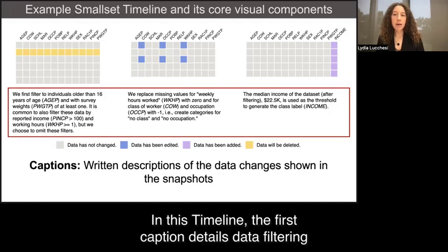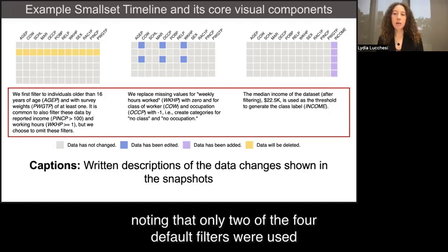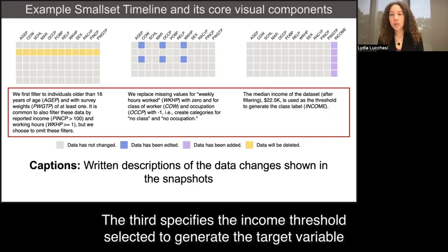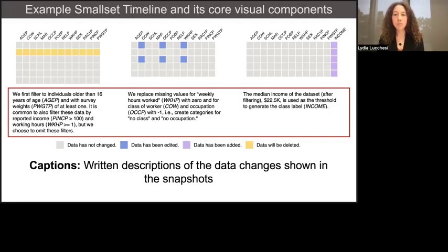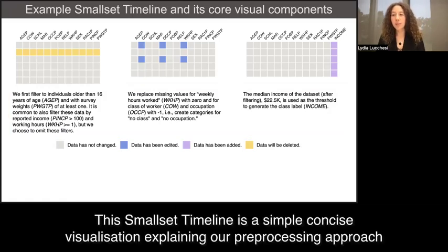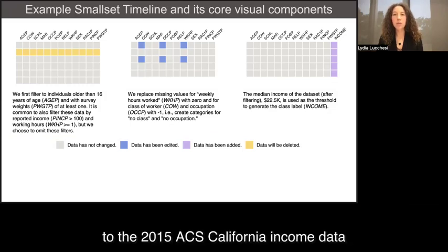In this timeline, the first caption details data filtering, noting that only two of the four default filters were used. The second caption describes how missing values were dealt with, and the third specifies the income threshold selected to generate the target variable. This small set timeline is a simple, concise visualization explaining our pre-processing approach to the 2015 ACS California income data.